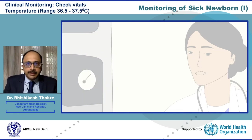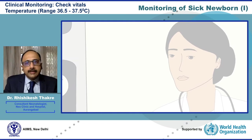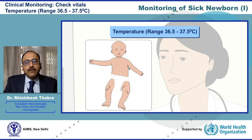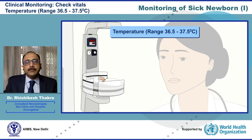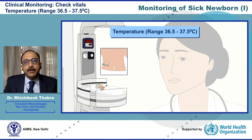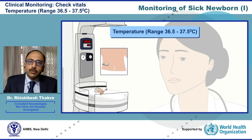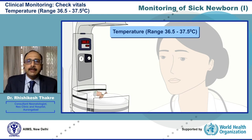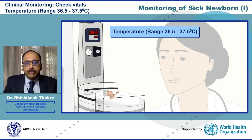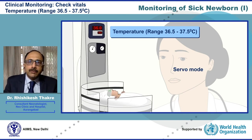Having done a rapid CBC, let us move on to assessing the vital parameters. Temperature forms the foundation for the sick newborn, and therefore all newborns must have assessment for thermal well-being. Babies nursed under a warmer must be assessed for the skin probe being appropriately placed and one must know the mode in which the radiant warmer is set. In the first week of life, for all newborns, one would ensure that the baby is under servo control mode set at a temperature of 36 degrees Celsius.